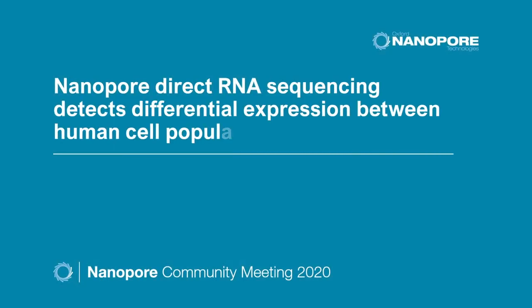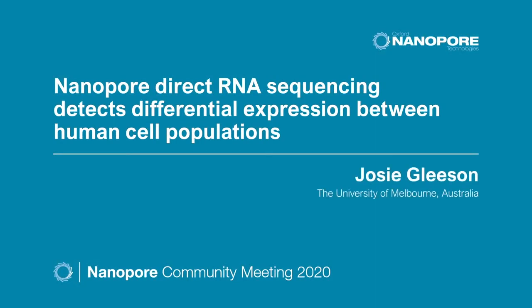Hi everyone, my name is Josie Gleeson and I'm from the University of Melbourne. My talk today is on using nanopore direct RNA sequencing to detect differential expression between human cell populations. This research is also currently available on Bioarchive as a pre-print if anyone wants further information.